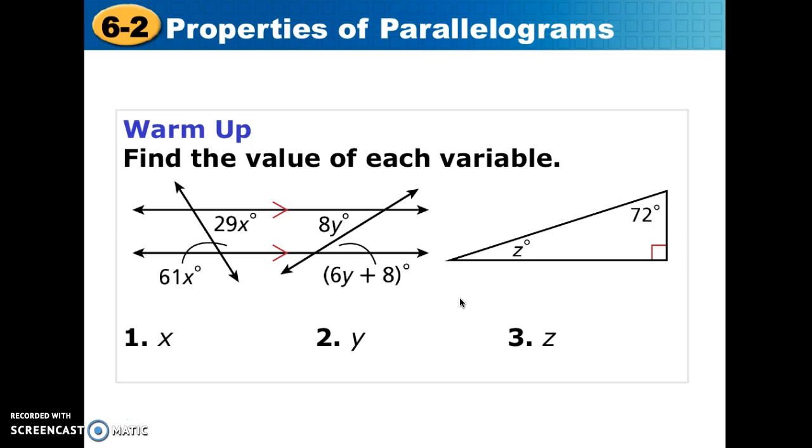Okay, hopefully you noticed that the 29x degrees and the 61x degrees are going to allow us to solve for x by making those two supplementary. So those are same side interior angles, which means when we add them together, we end up getting 180 degrees. So that allows us to solve for x. And when we do, we get x is equal to 2.